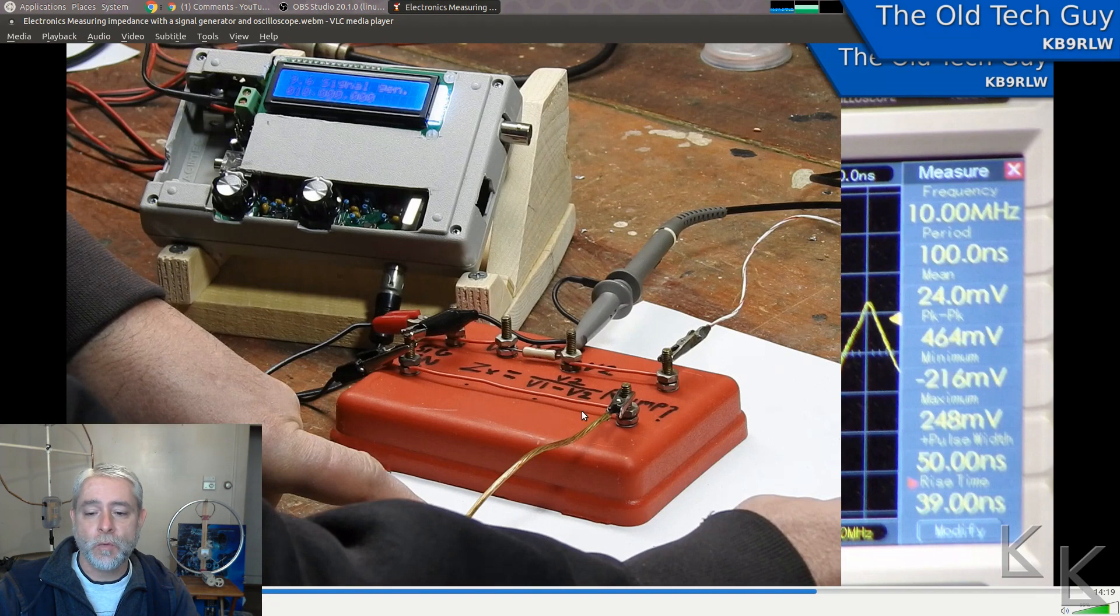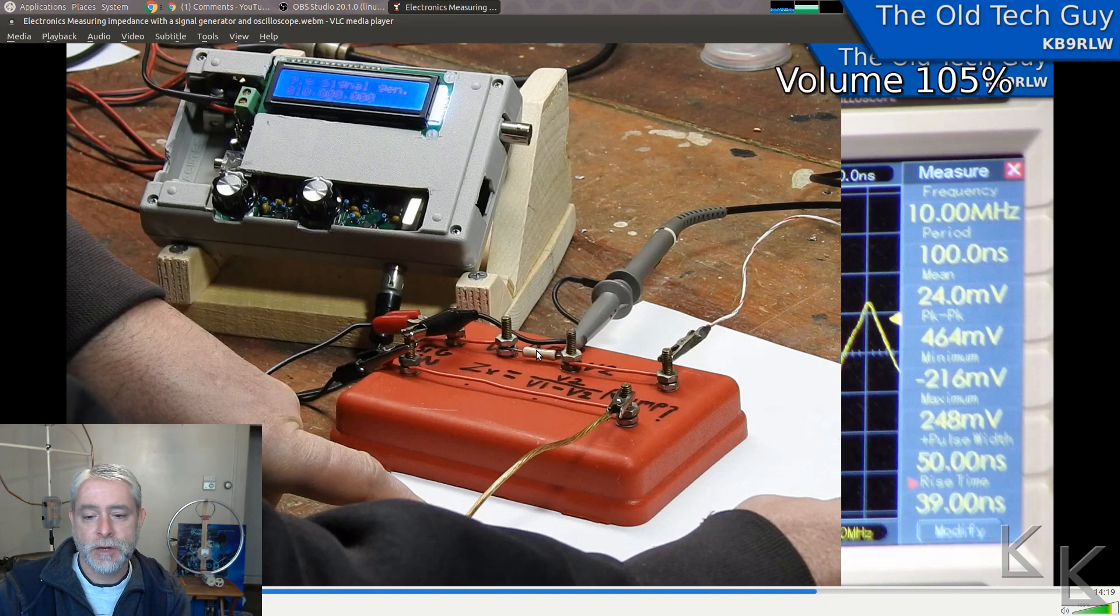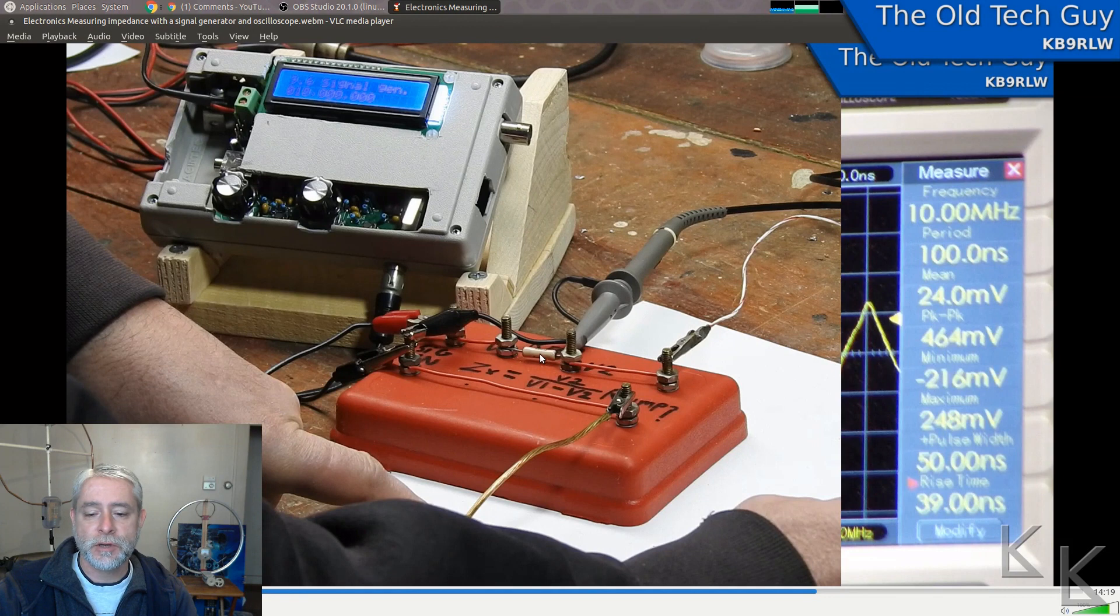There were a couple of comments. One was this reference resistor here. I used a precision resistor which could be a wire wound resistor which would have an inductive component. So that should probably be a carbon resistor so it doesn't have any inductance that would change its voltage drop with frequency. But I had another comment that was very intriguing.